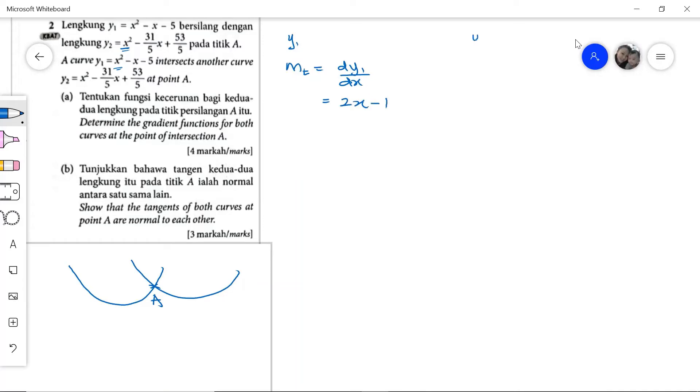For y2, the second curve, the gradient of tangent m_t2 equals dy2 by dx, which gives us 2x minus 31 over 5. So we found the gradient function for both curves at the intersection point A.